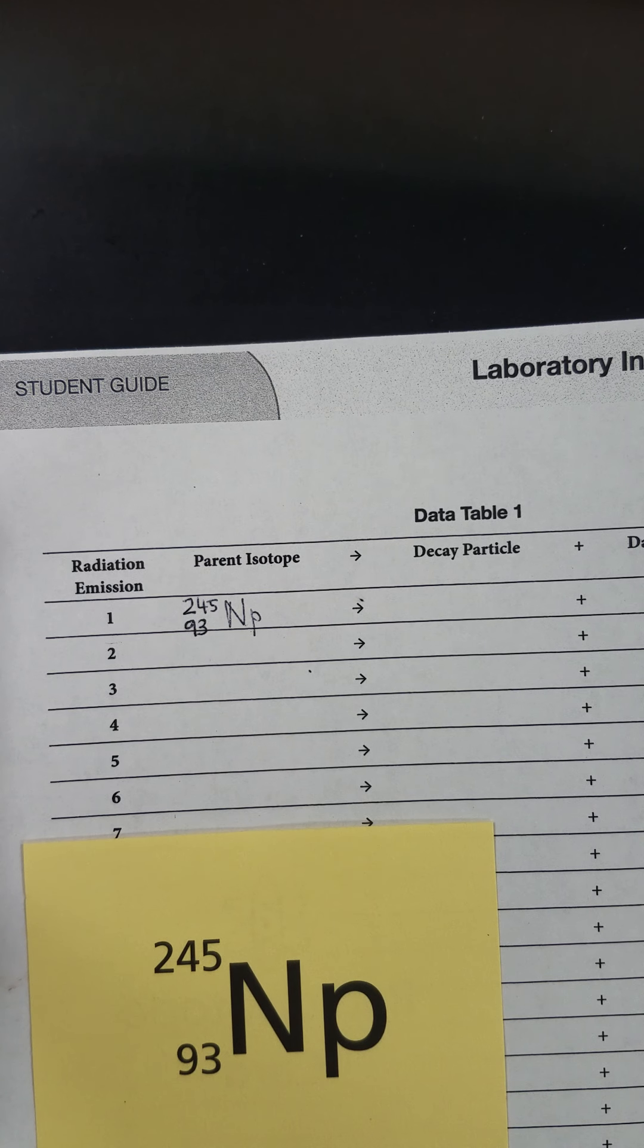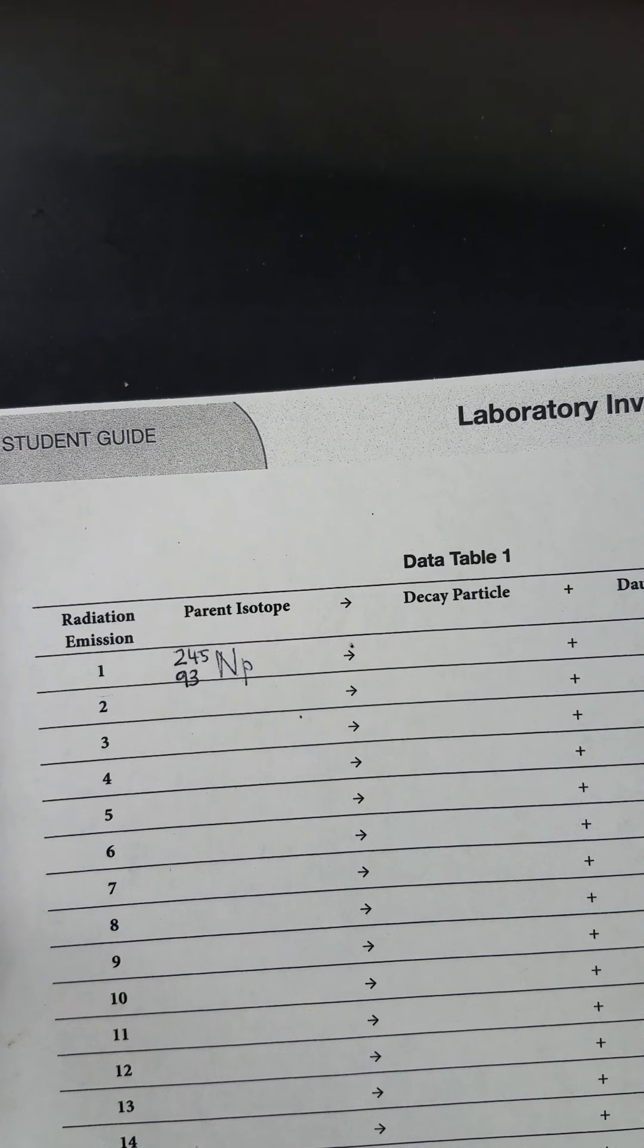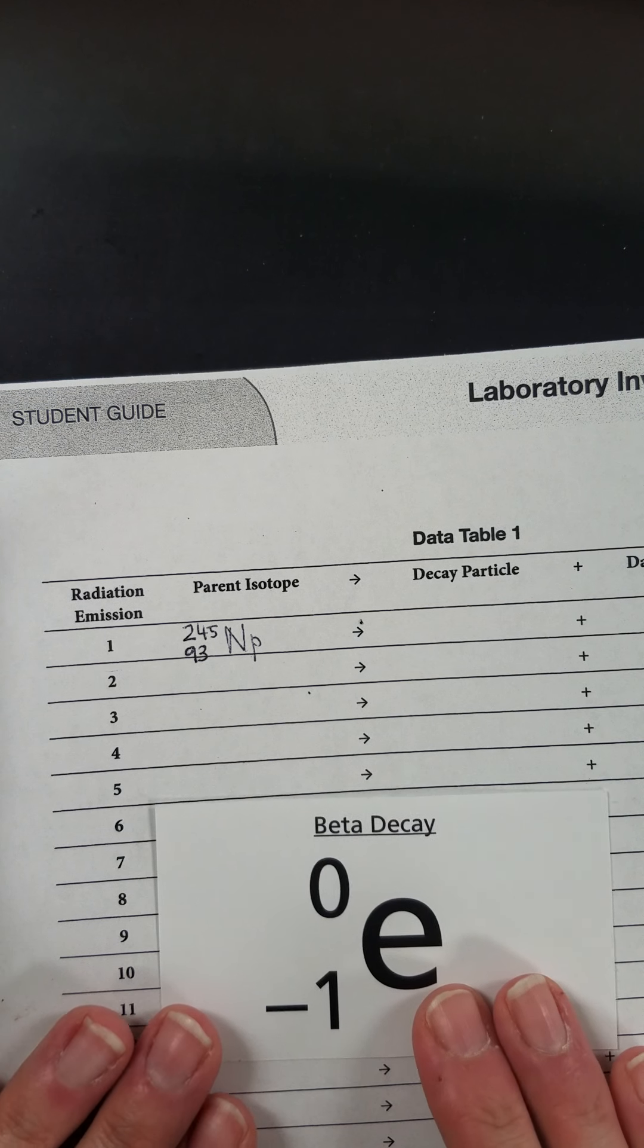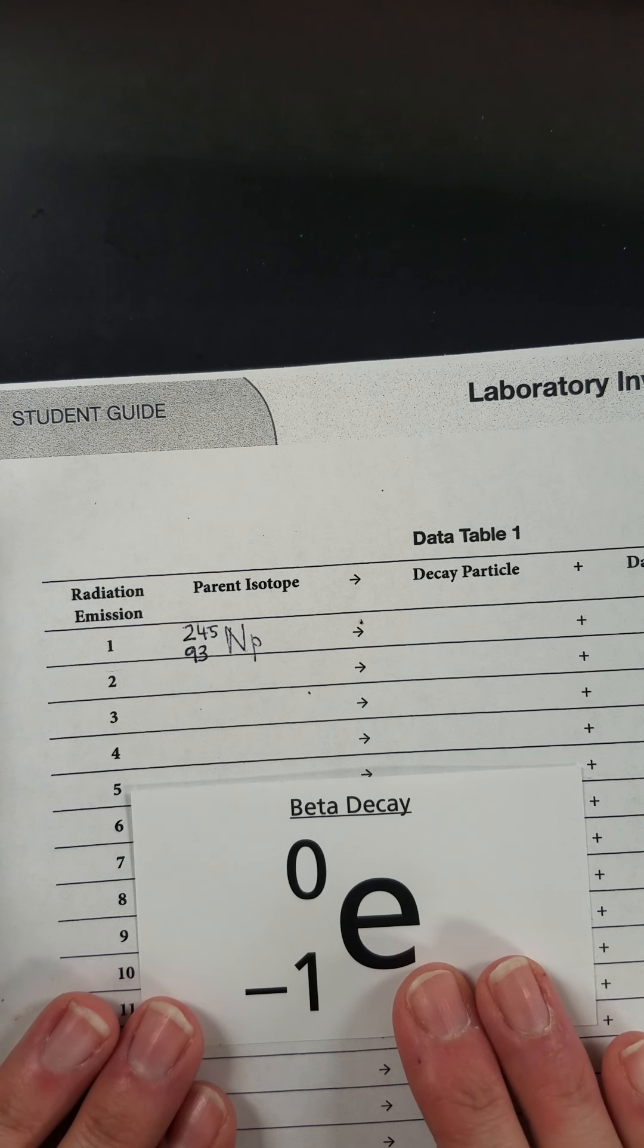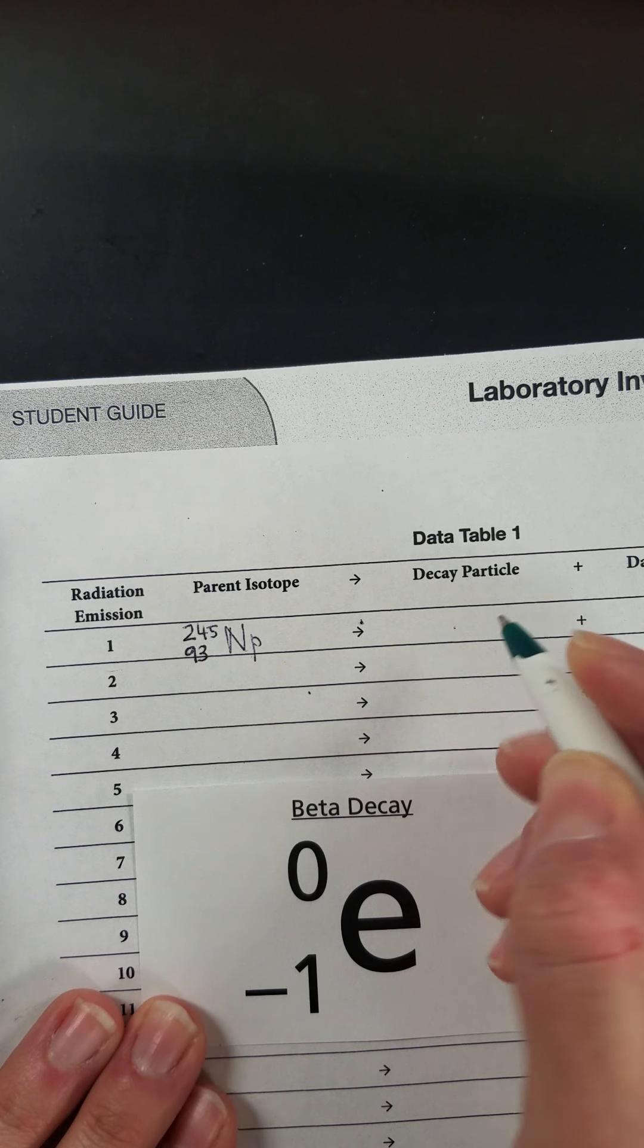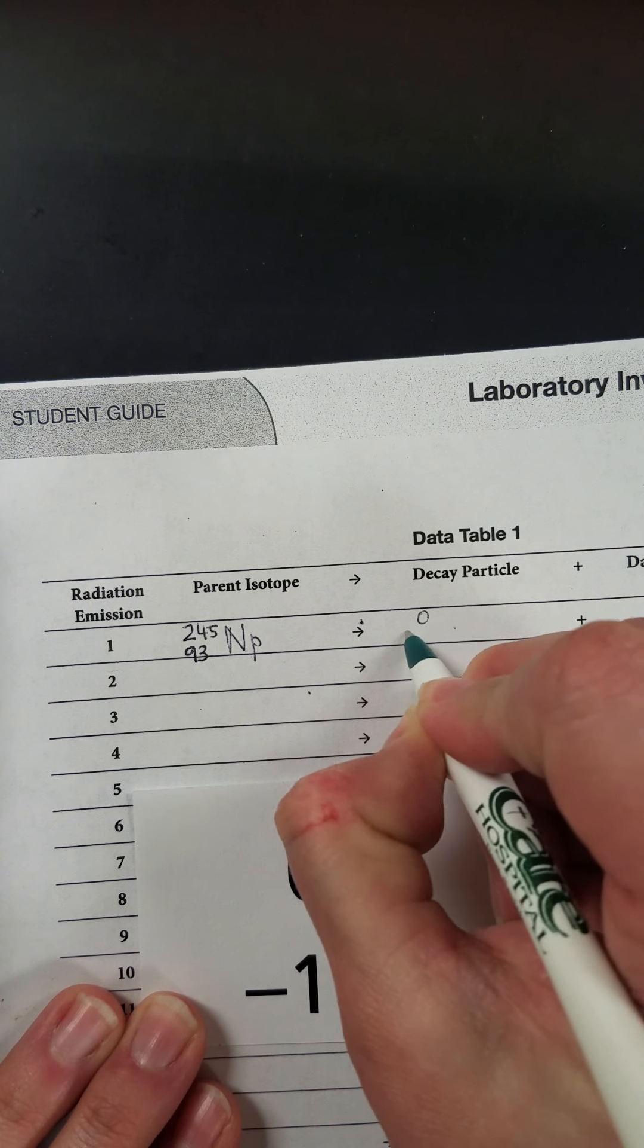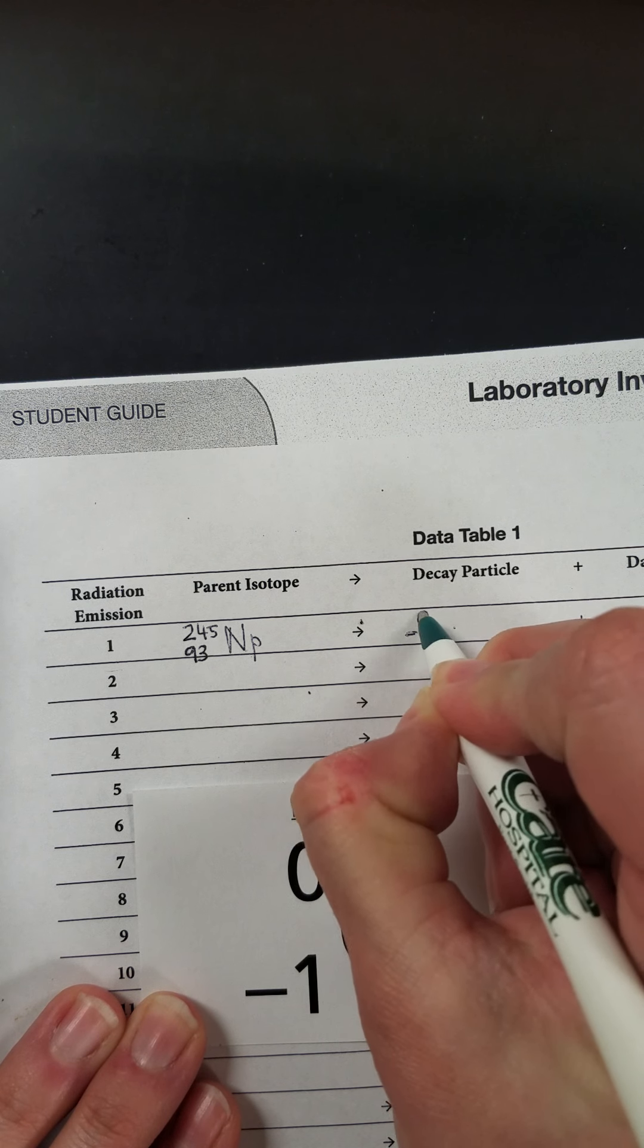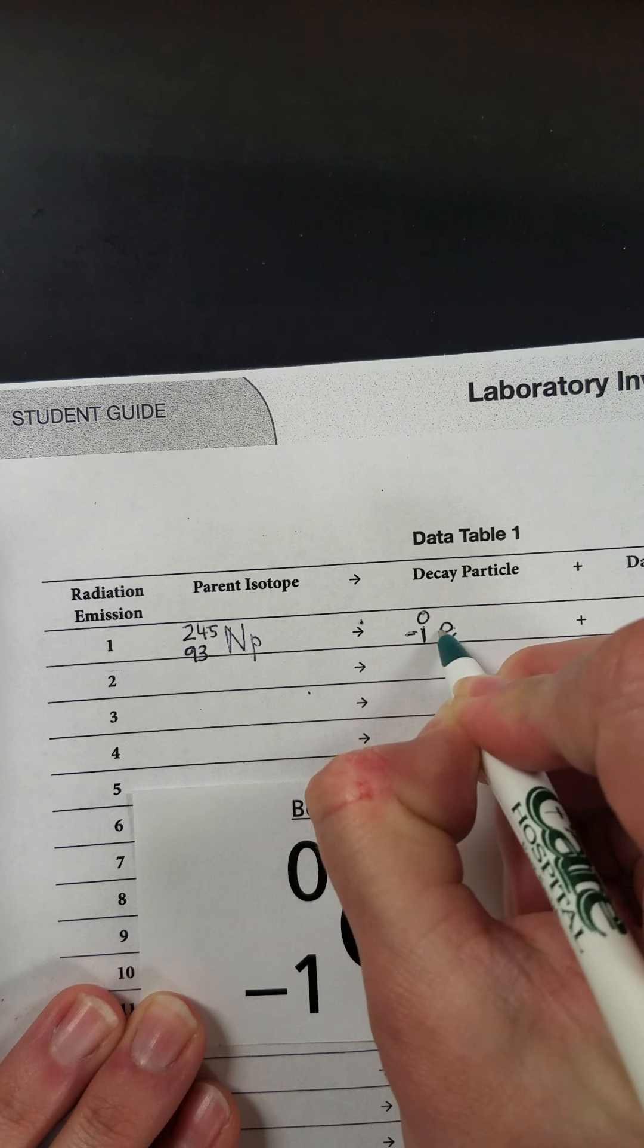And then I'm going to draw one of my radioactive decay cards and I get beta decay. So I'm going to fill that in, in the column for the decay particle.